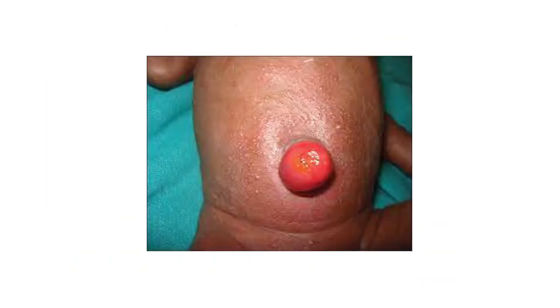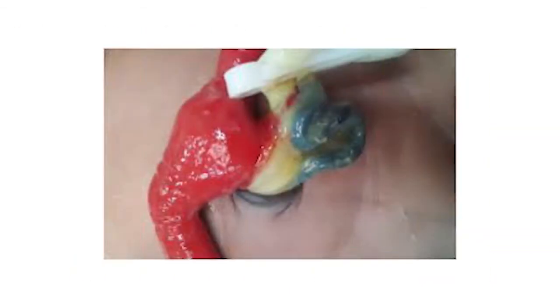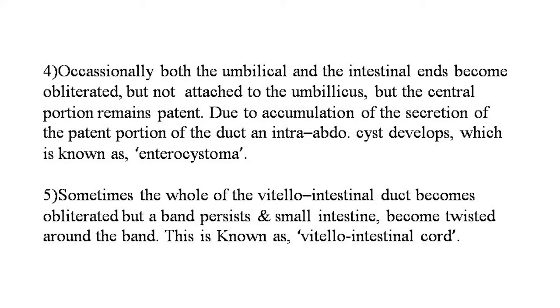Images of the vitello-intestinal duct and its various deformities — including connections with the abdominal wall and bifurcations — are shown on screen. Fourth, if both the umbilical and intestinal ends obliterate but the central portion remains patent, accumulation of secretions produces an intra-abdominal cyst called an enterocystoma. Fifth, if the entire duct obliterates but a band persists, the small intestine may twist around the band — this is known as the vitello-intestinal cord.